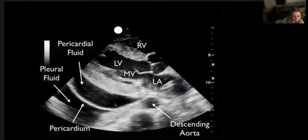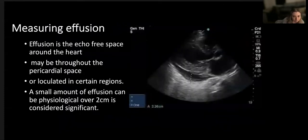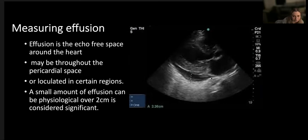Here again we've got both - a pericardial and a pleural effusion. The pericardial fluid is a little more, so it's pushed that pleural fluid away from the descending aorta. When measuring the effusion, it will collect in different areas. Generally measure at the widest point, describe where it is, and measure perpendicularly across. Comment on whether it's loculated or whether there are fibrin strands. Anything over two centimeters is more significant, but it depends on how quickly it collects.